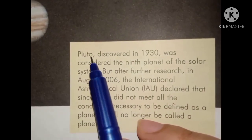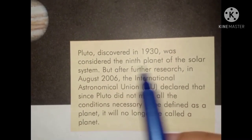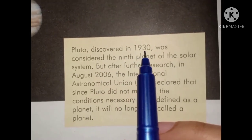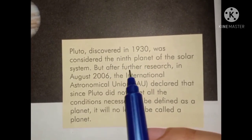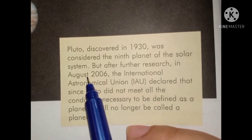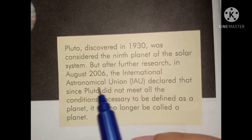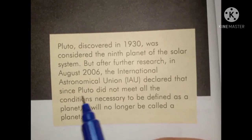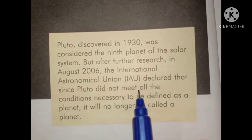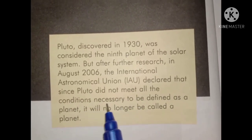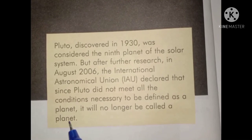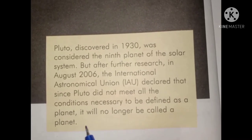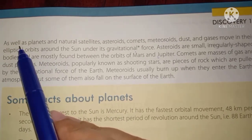Pluto was considered the ninth planet of the solar system and was discovered in 1930. However, after further research, in August 2006 the International Astronomical Union declared that since Pluto did not meet all the conditions necessary to be defined as a planet, it would no longer be called a planet.